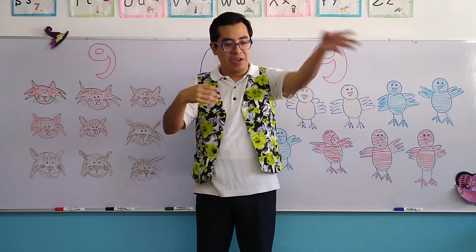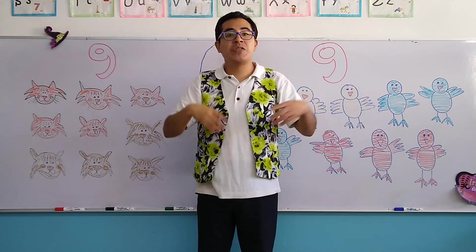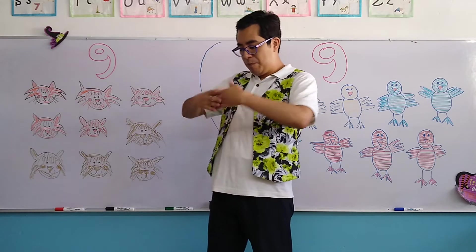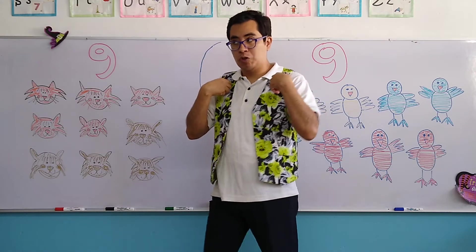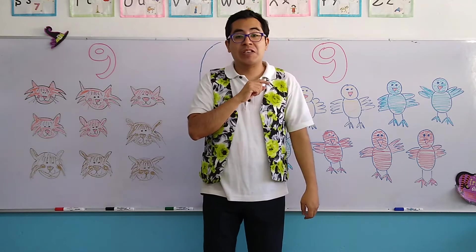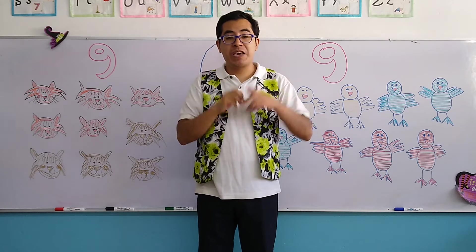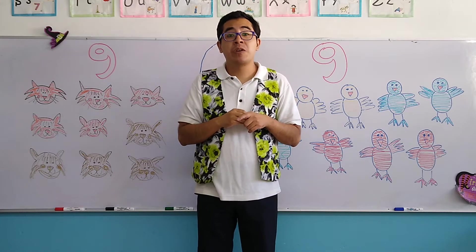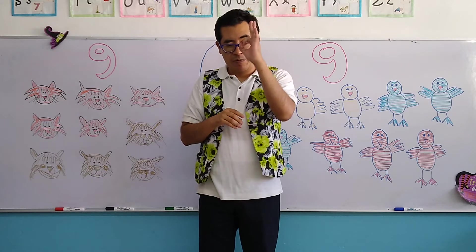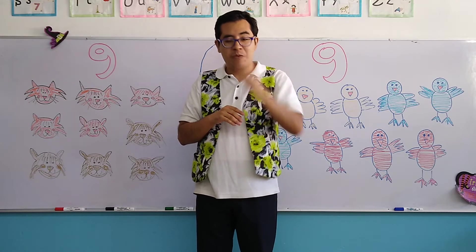It eats pizzas, hamburgers, spaghetti. So that's why it has a big belly, a big stomach. Number 6 is a cherry. Don't forget that a cherry is a fruit color red. It's a very tiny fruit color red.